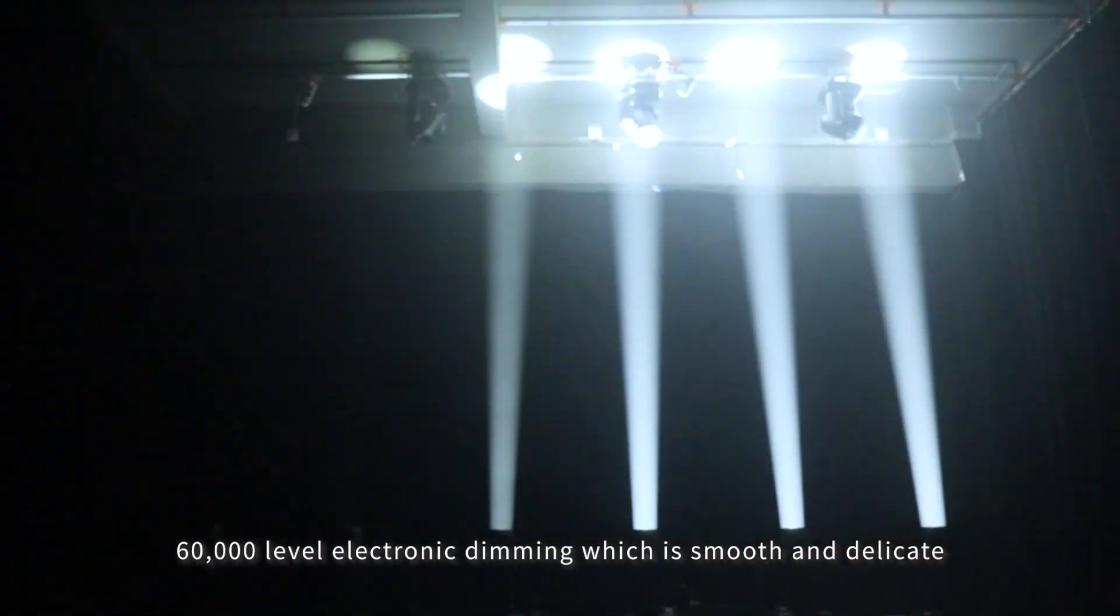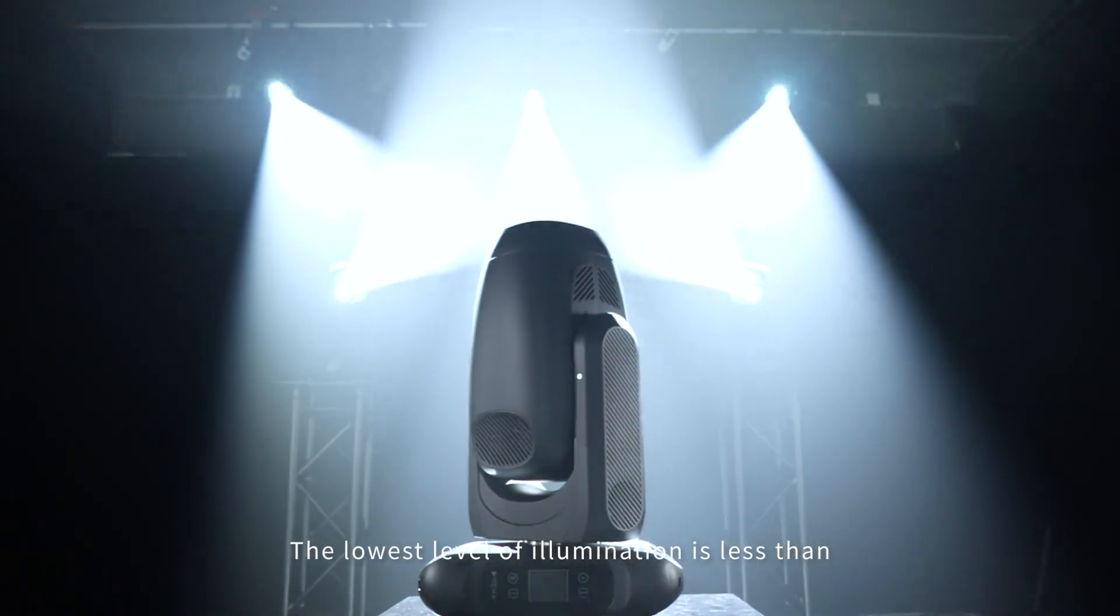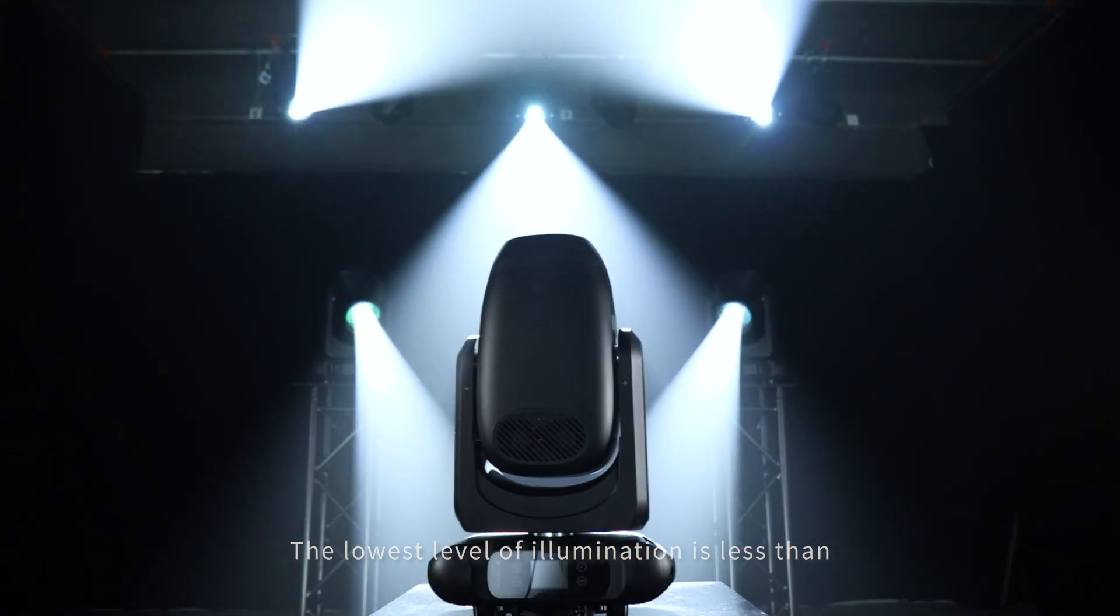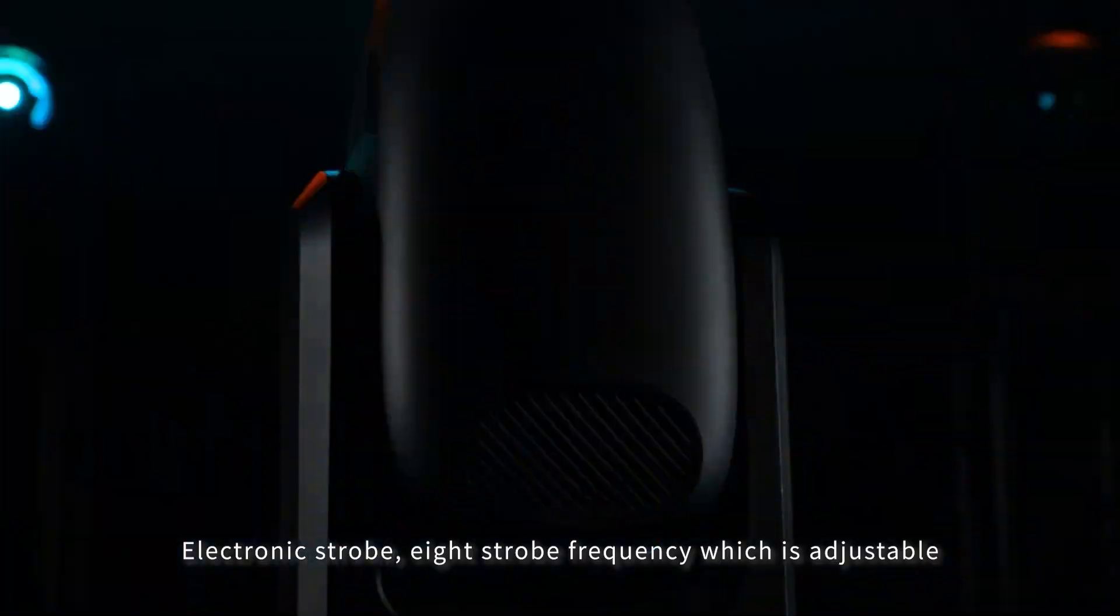Theater level dimming technology, 60,000 level electronic dimming which is smooth and delicate. The lowest level of illumination is less than 1/10,000 of the highest illumination. Electronic strobe.